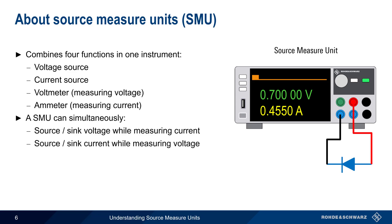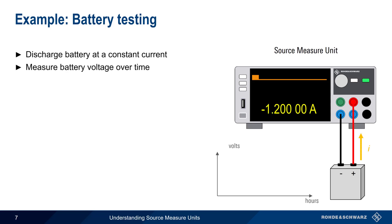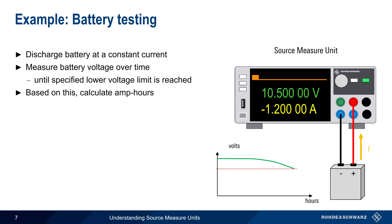Conversely, a source measure unit can source or sink current while measuring voltage. An example of using an SMU to sink current while measuring voltage is battery testing. Batteries are often tested by discharging them at a constant current and then measuring their voltage over time, usually until a specified lower voltage limit is reached. Based on this information, we can then calculate the capacity of the battery in amp hours. Amp hours is simply the number of hours needed to reach this lower voltage threshold times the constant amps drawn over this time period.